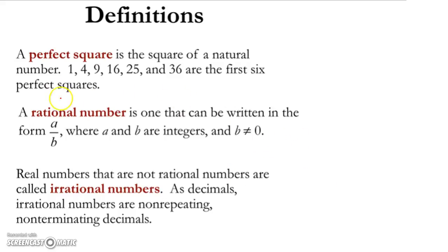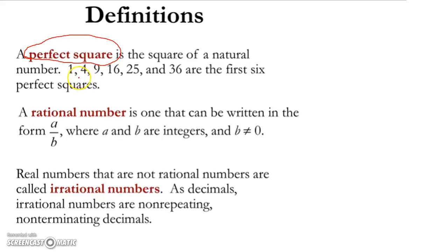These definitions are actually relatively important, especially this first one — the perfect square concept. A perfect square or perfect power is the square of a natural number. So 1 squared is 1, 2 squared is 4, 3 squared is 9, 4 squared is 16, 5 squared is 25, and so on. You should be familiar with these numbers — 1, 4, 9, 16, 25, 36, and so on — because those are perfect squares, and they're going to be important for the next process called completing the square.